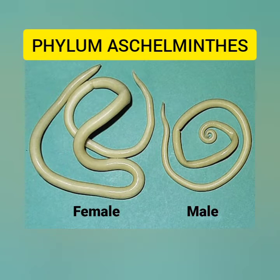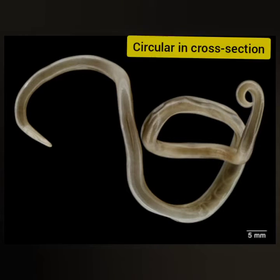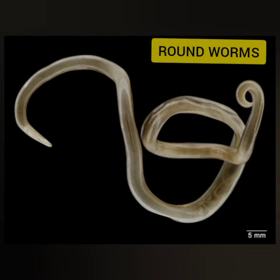Hello friends, welcome back to another quick revision. In this video we are going to deal with the topic phylum Aschelminthes. The body of Aschelminthes is circular in cross-section, hence they are termed as roundworms.